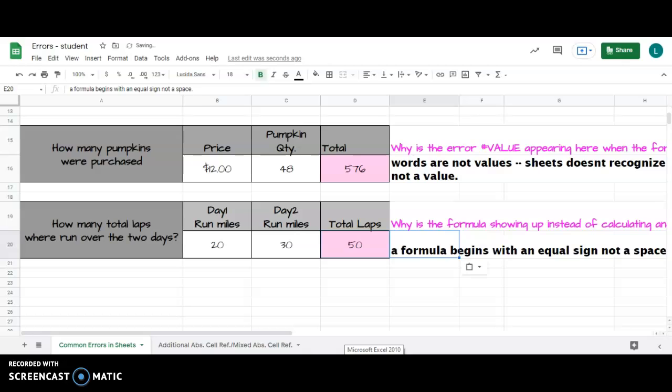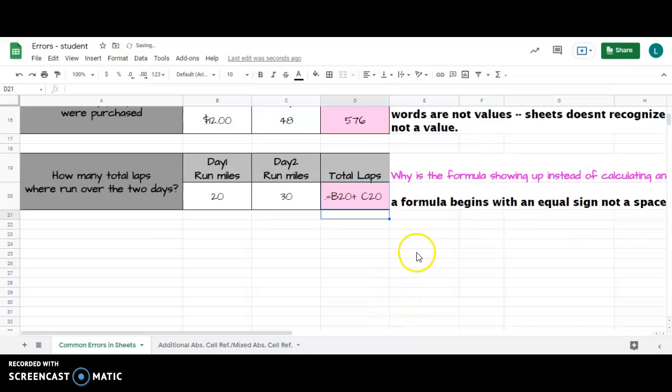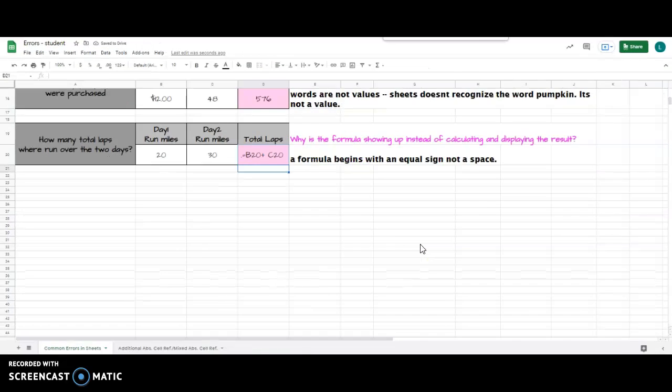Because a formula begins with an equal sign, it doesn't begin with a space, it doesn't begin with another character like a period. And sometimes when you're zoomed all the way out, you might not be able to see that little character.